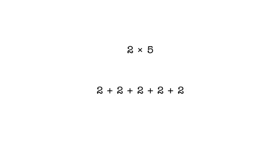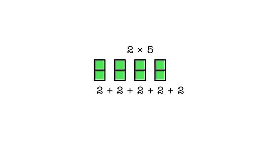You already know that multiplication is just another way of writing repeated addition, so we can rewrite 2 times 5 like this. Each 2 that we add we can show like this: 2, plus 2, plus 2, plus 2, plus 2. Now we can make an array using the blocks for each 2 like this.